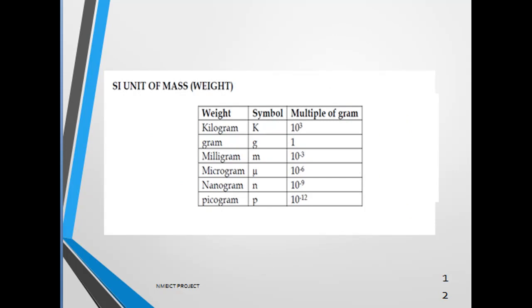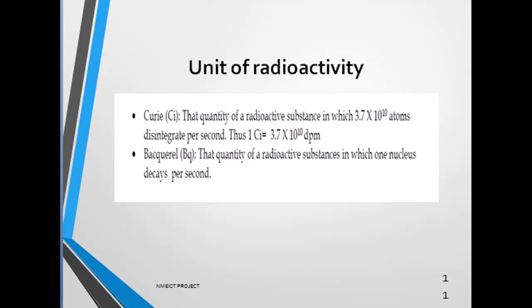Units of radioactivity: Curie is that quantity of radioactive substance in which 3.7 x 10^10 atoms disintegrate per second. This is also another unit of radioactivity.